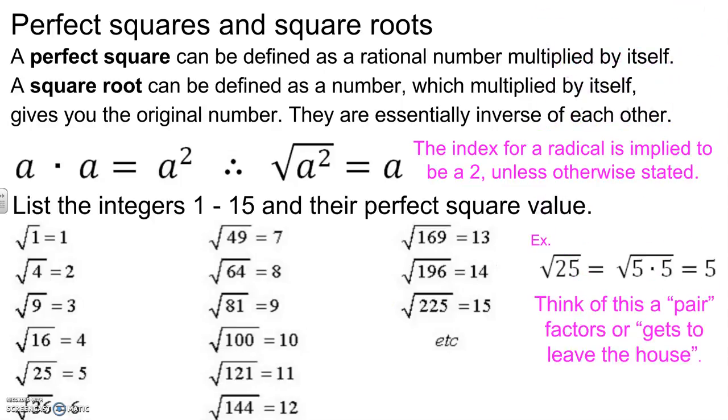And you can think of it also as a pair of factors that get to leave the house. So here's my little house. That's my radical here. And 25, when I break 25 into its factors of 5 and 5, this pair factors out to 5. So 5 squared would be equal to 25.